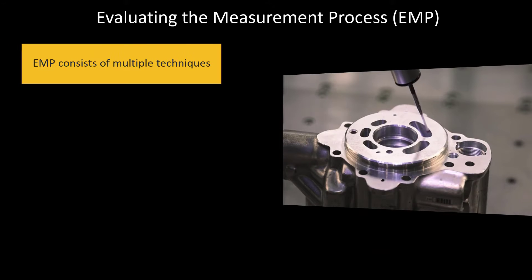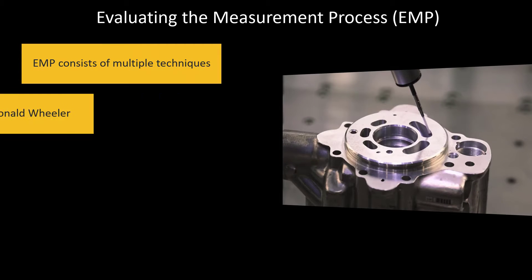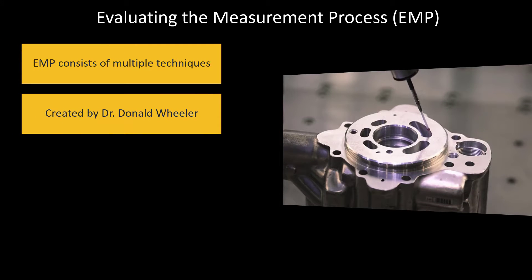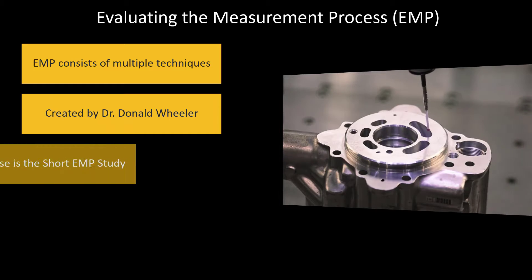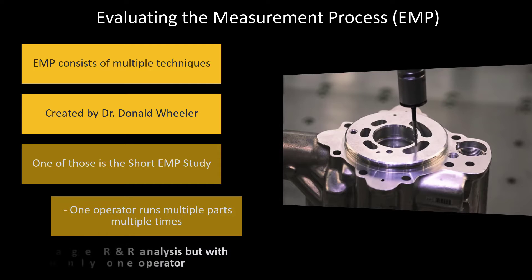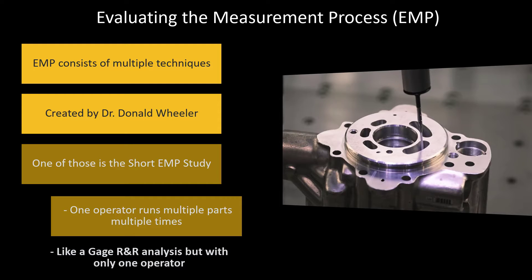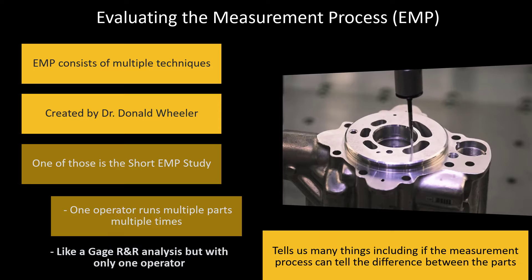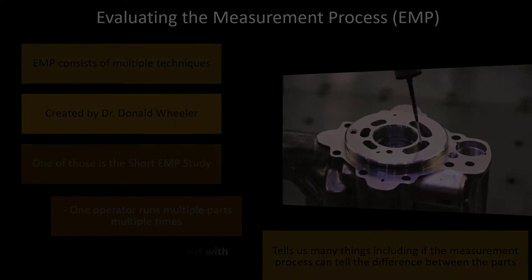These techniques were developed by Dr. Donald Wheeler. And one of those is called the Short EMP Study. It's one operator running multiple parts, multiple times. It's similar to a gauge R&R analysis, but only one operator. And then based on the results, it's going to tell us many things, including if the measurement process can tell the difference between the parts.